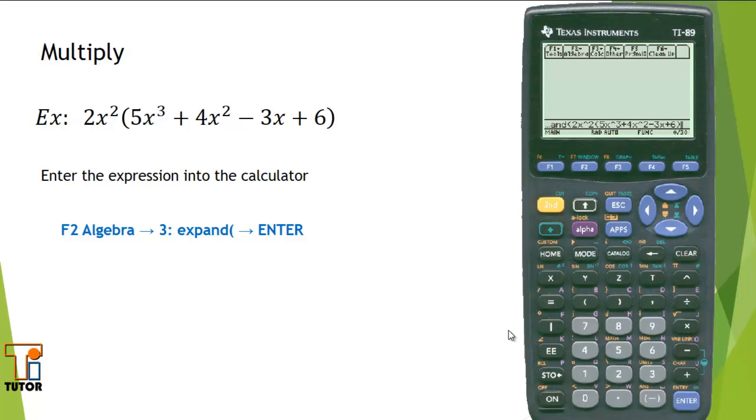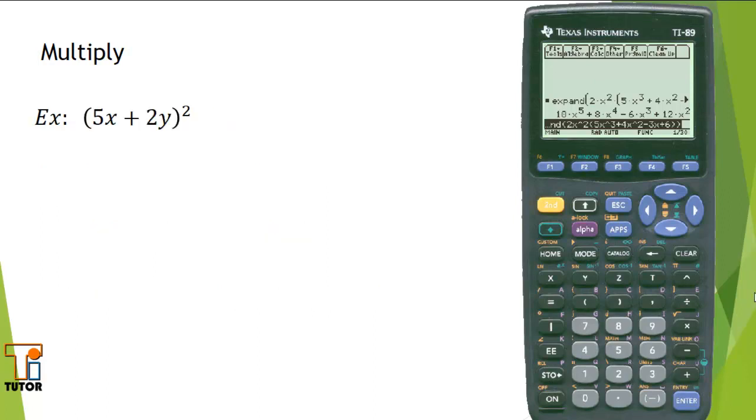I'll close off my factor and I'll close off the EXPAND function with a set of parentheses. And we have 18x⁵ plus 8x⁴ minus 6x³ plus 12x². Let's take a look at another example.